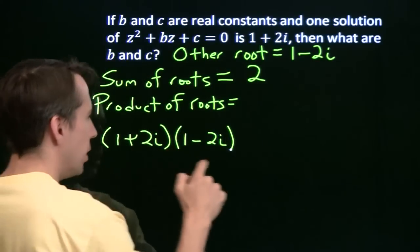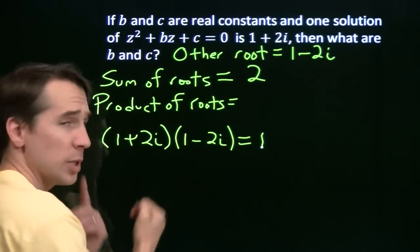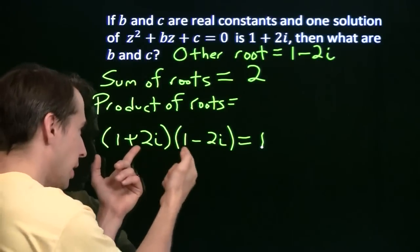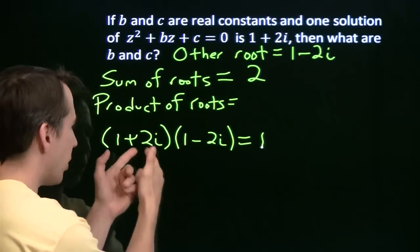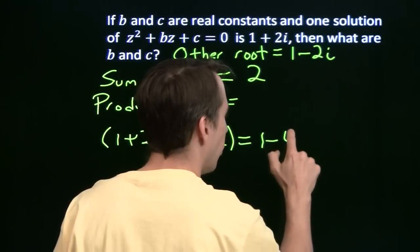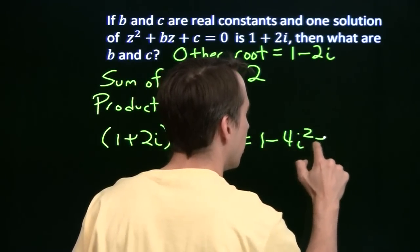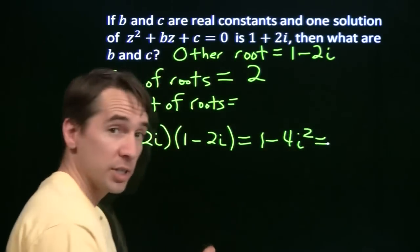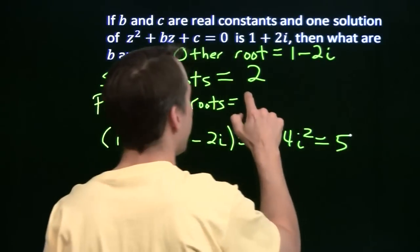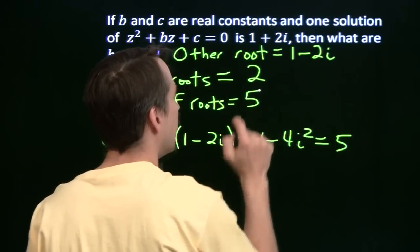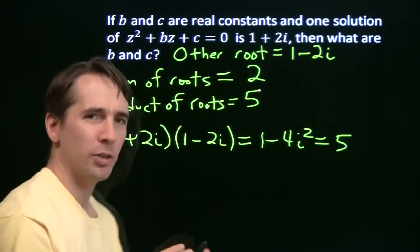We have 1 times 1 gives us 1. 1 times minus 2i and 2i times 1 are going to cancel each other out. And then we have minus 4i squared. i squared is negative 1, so we have 1 plus 4, that gives us 5. And now we have the sum of the roots and the product of the roots.